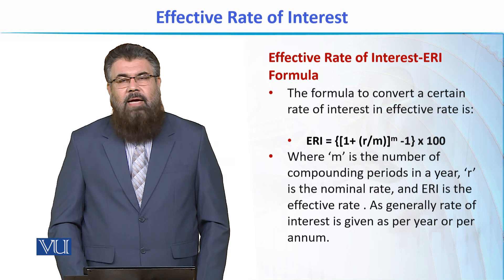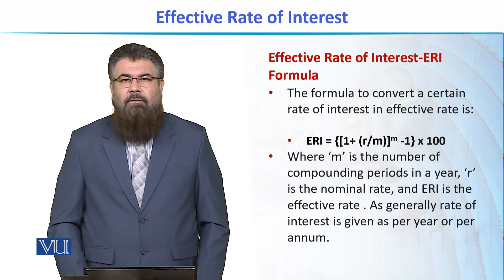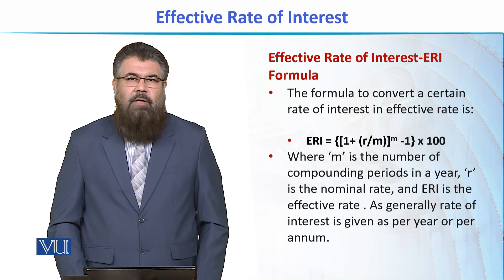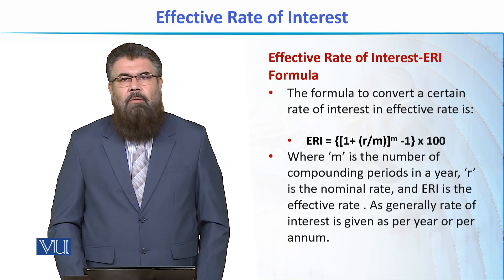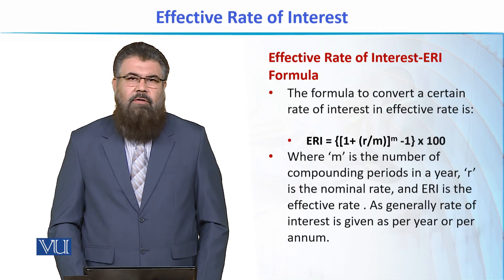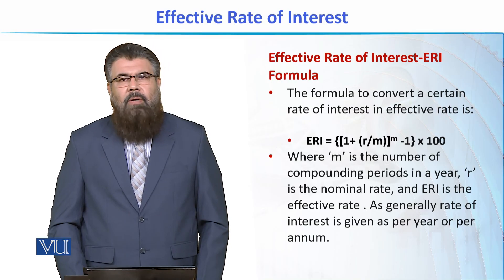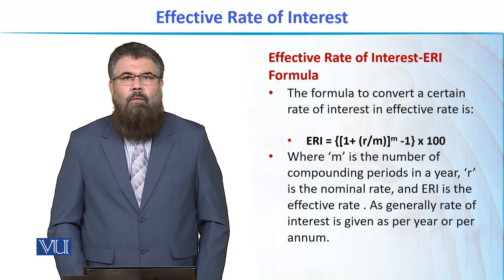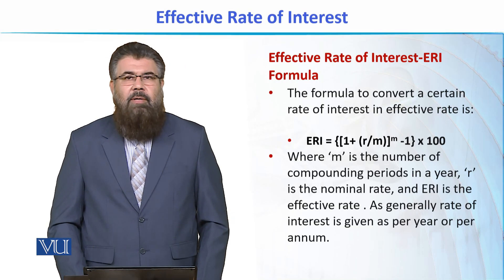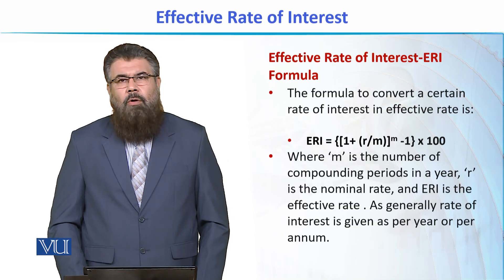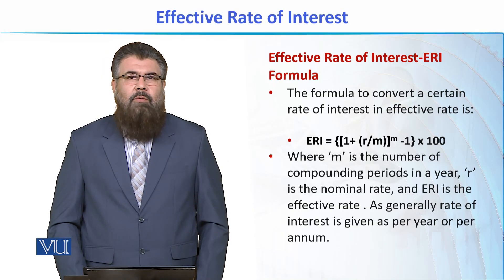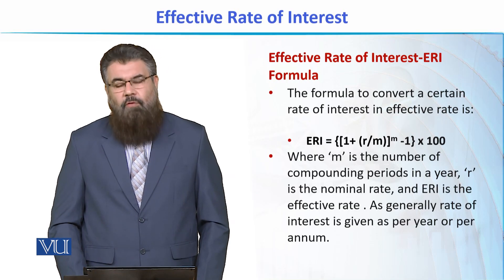M is the number of compounding periods in one year. For example, if compounding is done semi-annually or twice in a year, there will be two compounding periods, so M equals 2. Similarly, for quarterly compounding, because there are 4 quarters in a year, the value of M will be 4.